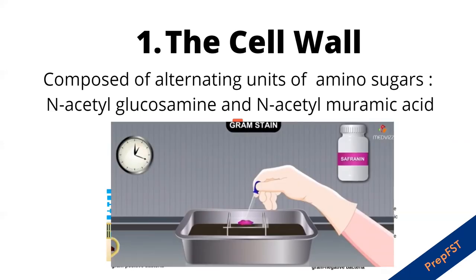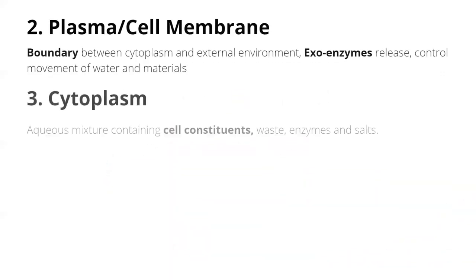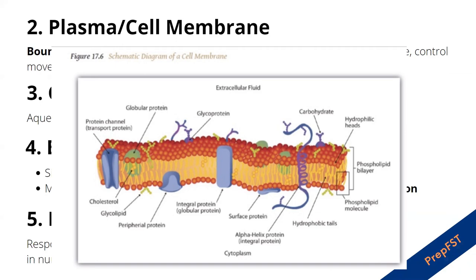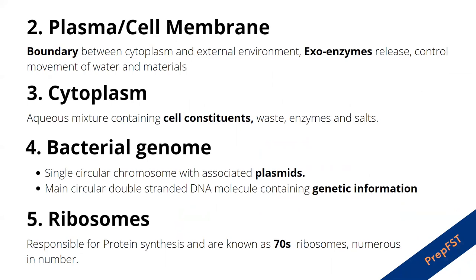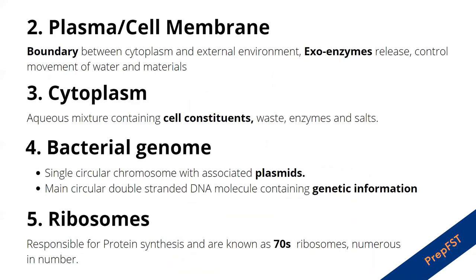Hence gram negative cells only take up the counter stain later in the gram staining process. The cell membrane is composed of a phospholipid bilayer. It forms a boundary between the cytoplasm and the external environment and contains exoenzymes that release and control the movement of water and other materials important to cell functioning. The cytoplasm is an aqueous mixture containing about 75% water and contains all the cell constituents, waste, enzymes, and salts.